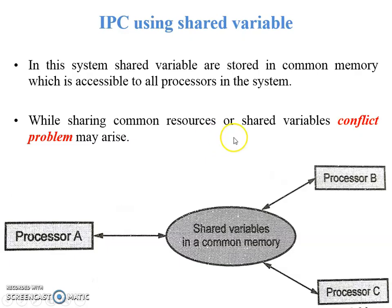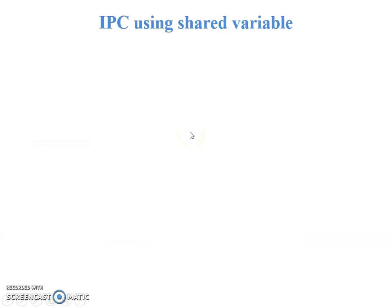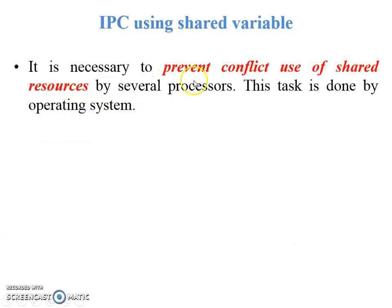While sharing a common resource or shared variable, conflict may arise. For example, processor A accesses a shared variable from common memory and execution is going on; at that time processor B also requires the same shared variable — this is called the conflict problem. In operating systems with shared variable systems, it is necessary to prevent conflict in use of shared resources by several processors.